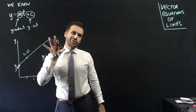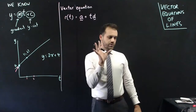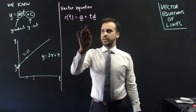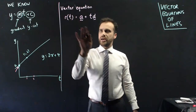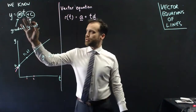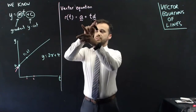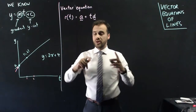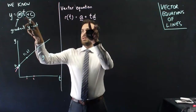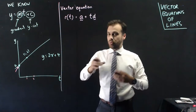Now we're going to look at the vector equation, which is going to feel a little bit similar. Here's our vector equation of a straight line: r with respect to t is equal to a plus td. Note that a and d are vectors. This looks very similar to the Cartesian form — t and d are analogous to x and m, and a is analogous to c. They're going to be analogous, and we'll see how that works.